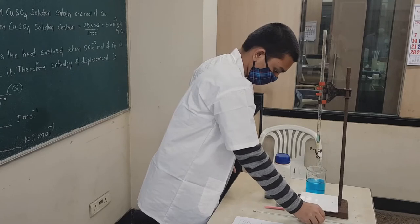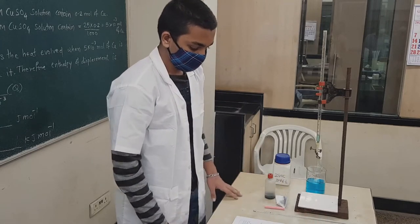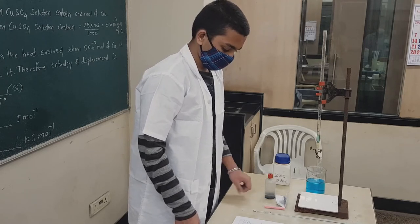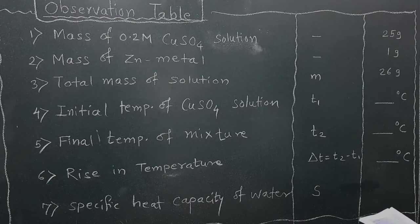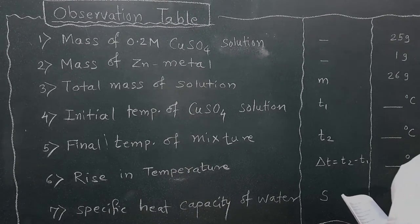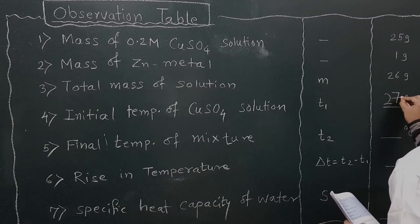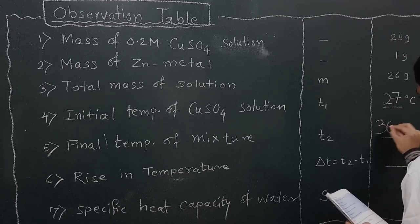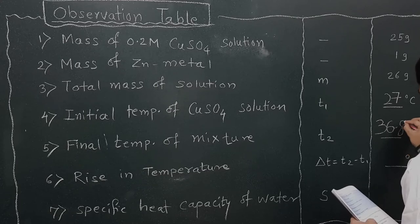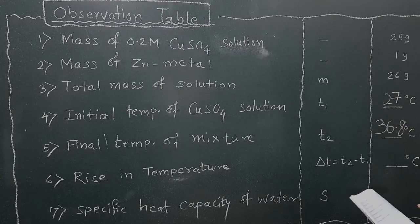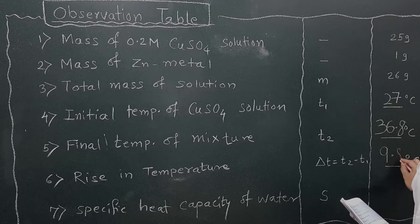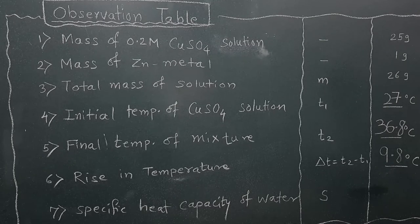Students, you can see that the initial temperature is lower, and after adding zinc powder — because of the exothermic reaction — the final temperature is higher. The experiment is over and we now go to the calculation part. In the observation table, initial temperature T1 is 27°C, final temperature T2 is 36.8°C, and the rise in temperature ΔT = T2 − T1 = 36.8 − 27 = 9.8 degrees Celsius.